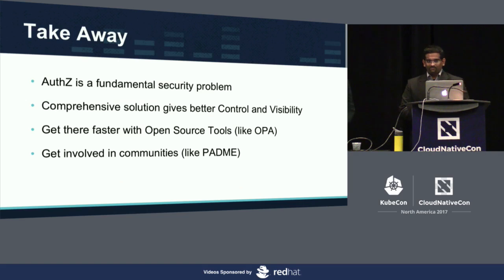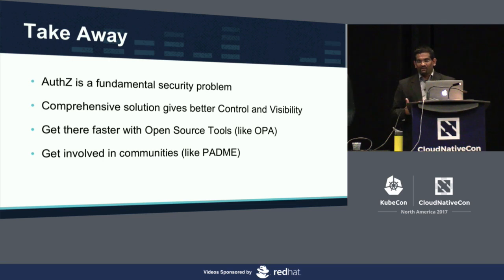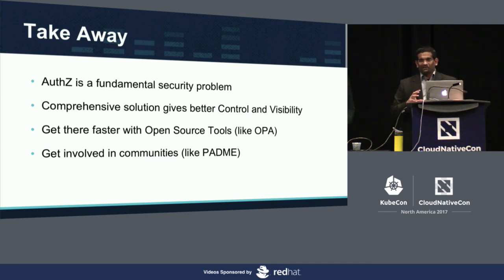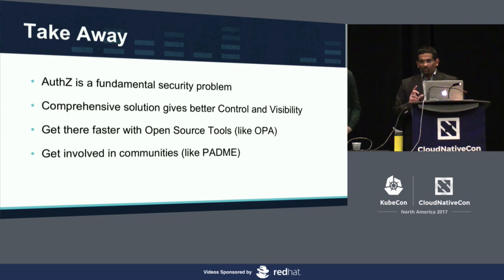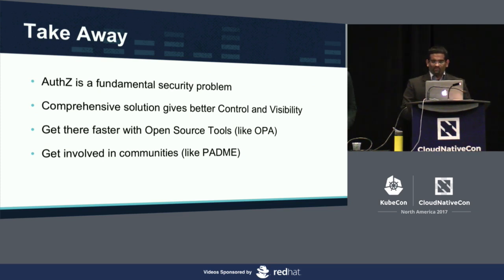In closing, the takeaway is that authorization is a fundamental security problem. It is not new to cloud — cloud just makes it more interesting. If you're not solving this problem yet, you're going to be there soon. You can't just wish this one away because network security, which was enough in our parents' days, is definitely not enough in a cloud environment. If you're going to tackle this problem, try to have a comprehensive solution rather than nine different authorization systems in your backend, because if they don't talk to each other and you don't have a common place for visibility, it's going to be really messy. You have open source projects like OPA that you can make use of.